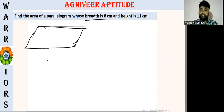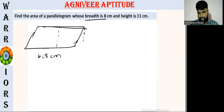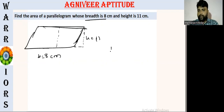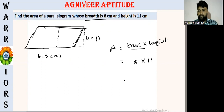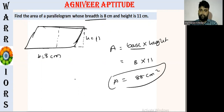So this is the breadth and this is the height. So the area of the parallelogram is equal to base into height. Base and breadth: base equal to 8 centimeters, height is 11. So 8 into 11 is 88 centimeters squared area. So this is easy. So this is the question.